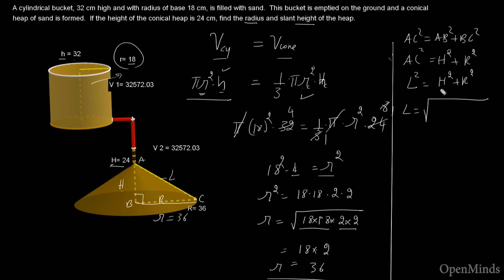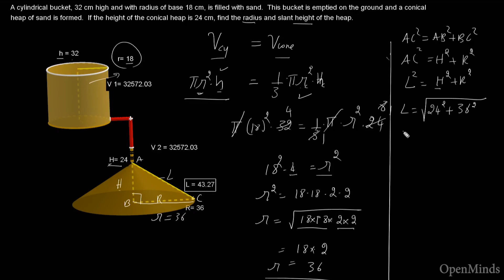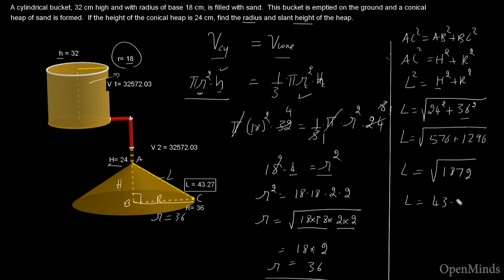Using the Pythagorean theorem: l² = h² + r². So l = √(24² + 36²) = √(576 + 1296) = √1872 = 43.27 centimeters. That is the slant height of the cone. That's all for this problem.